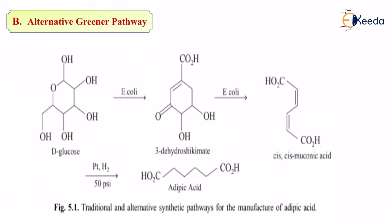To this D-glucose, if you add E-coli, you get 3-dehydroshikimate. That is a benzene ring destructured. On the top, you have a double bond. On top of it, you have CO2H. On meta positions, you have OH and double bond O. On the para position, you have an OH. Again, to this, if you add E-coli, you get cis-cis-muconic acid.